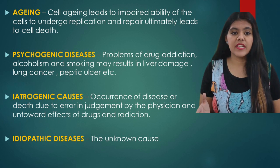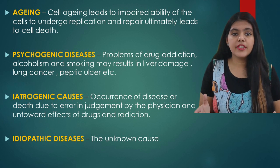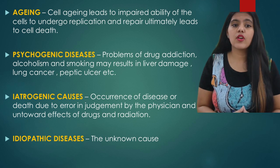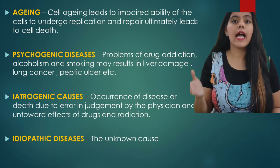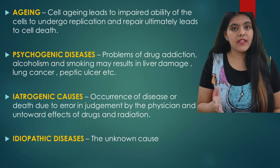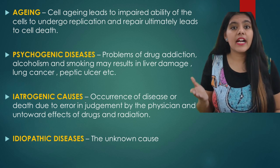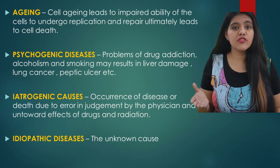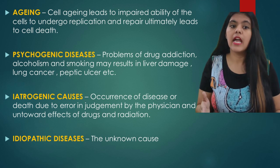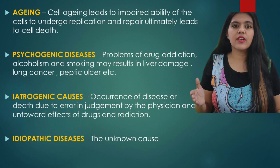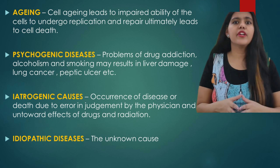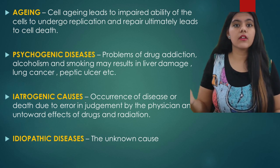Aging causes cells to have an impaired ability to repair and replicate, leading to cell death. Psychogenic causes include problems arising from drug use, alcoholism, and smoking, which can result in liver damage, lung cancer, and peptic ulcer. Iatrogenic causes may occur due to wrong judgment by a physician, leading to unwanted effects of drugs, medicines, and radiation. Idiopathic causes are unknown — for example, we still do not know the cause of certain cancers or hypertension in most people.